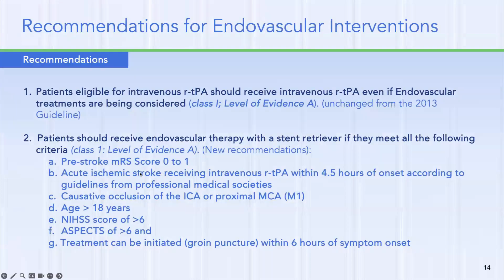Looking at what I call the 'three sixes': if you had a large vessel occlusion (defined as ICA or proximal MCA M1), your NIH Stroke Scale was six or greater, your ASPECTS was ≥6, and treatment could be initiated within six hours of symptom onset — the guidelines actually recommended patients go for endovascular therapy.